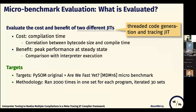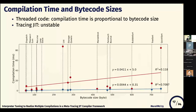We used the PySON origin and ran it against benchmarks of varying sizes. This figure shows the correlation between compilation time and bytecode size: the y-axis is compilation time and the x-axis is bytecode size. The red and blue lines represent tracing JIT and threaded code generation respectively. Threaded code compilation time is proportional to bytecode size, while tracing JIT levels off — making threaded code generation suitable as lightweight compilation because performance is easy to predict for small programs.